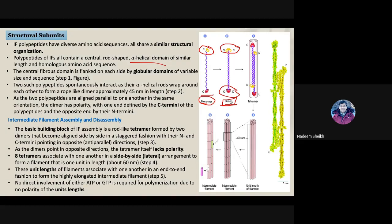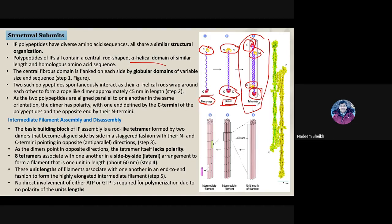The dimer alone is not the building block of the intermediate filament. Two dimers come together to make a tetrameric structure, arranged in an antiparallel orientation — one dimer has its C-terminal on one end while the other dimer has its N-terminal on the same end. This means the tetramer is a non-polar structure because polarity has been neutralized.